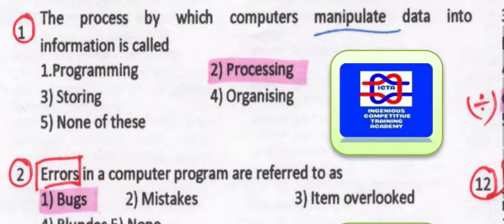Concerning computer terminology: the process by which computers manipulate data into information — that process is known as processing. In processing, the computer directly manipulates data into information. So whatever we feed in as input, that is data, which directly converts into information through processing.